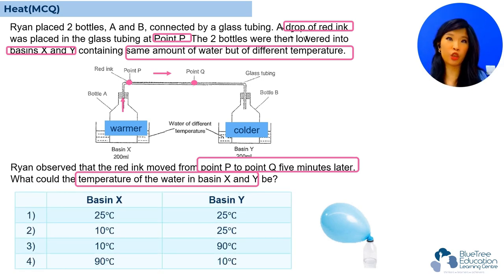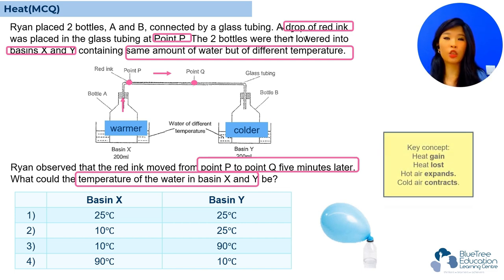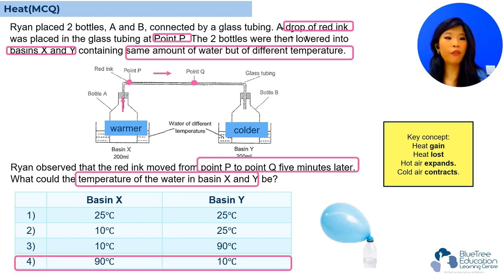Now, let's take a look at the multiple choice question. From the first multiple choice question, we know that it cannot be of the same temperature. So, using the elimination method, we know that number one is out. Number two and number three, we can see that the temperature in basin X is colder than basin Y. But we have indicated on the diagram that it has to be warmer. So, the answer will be number four.